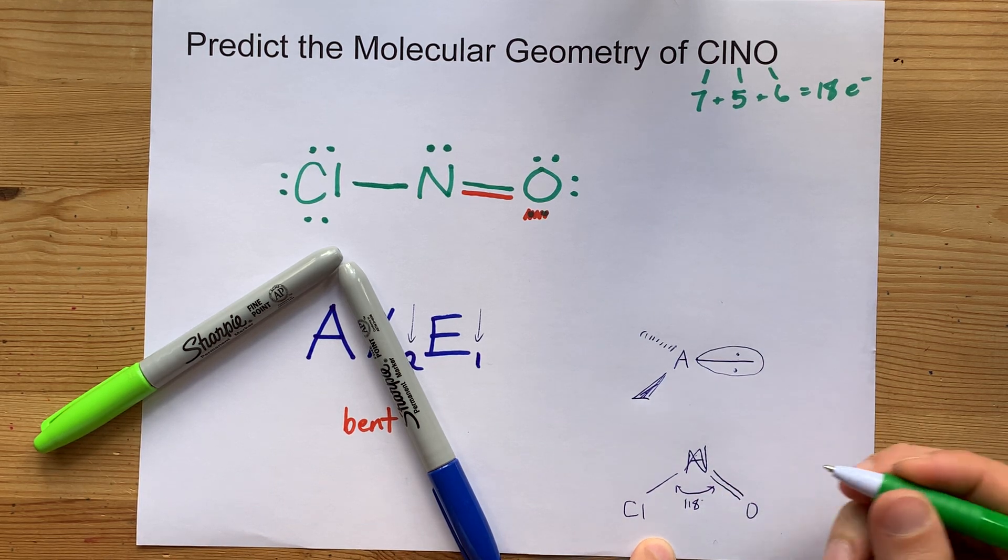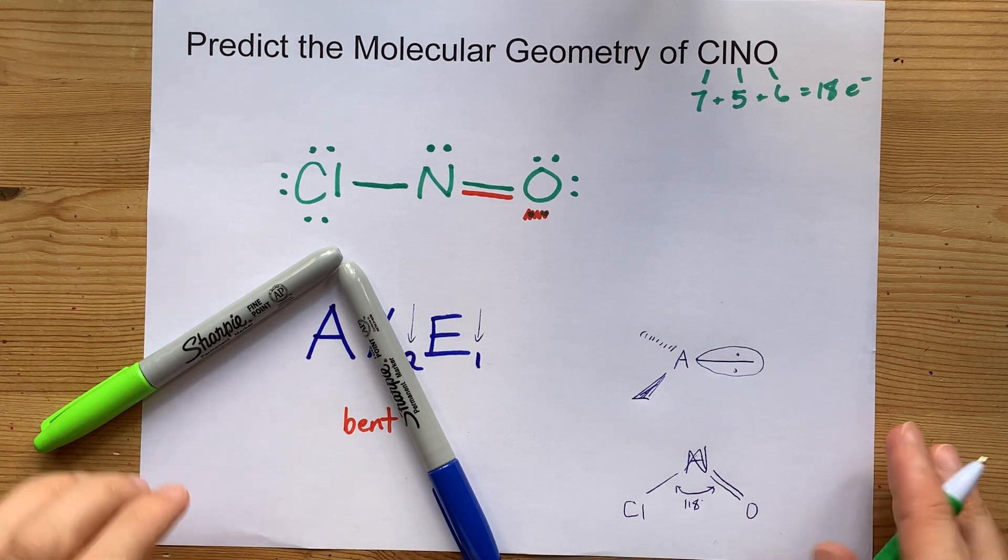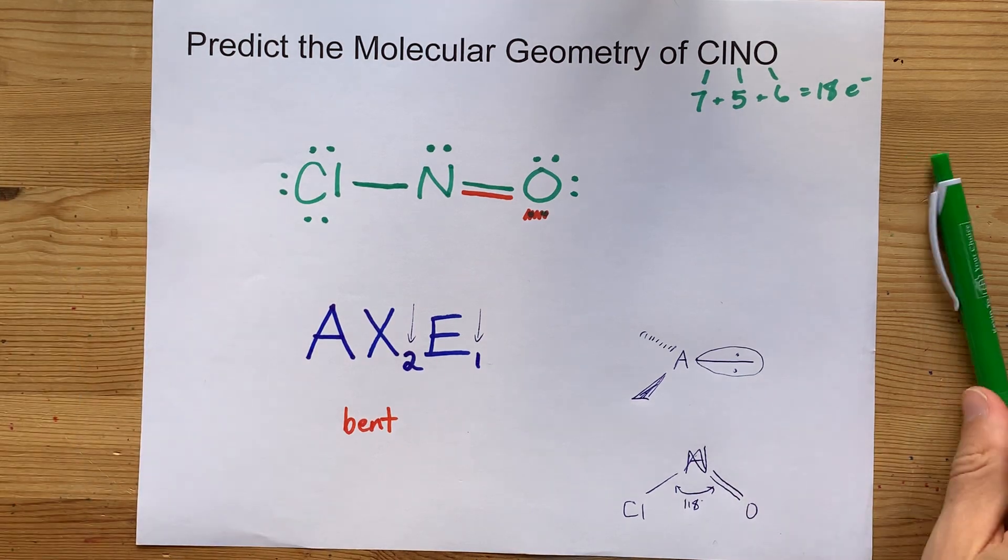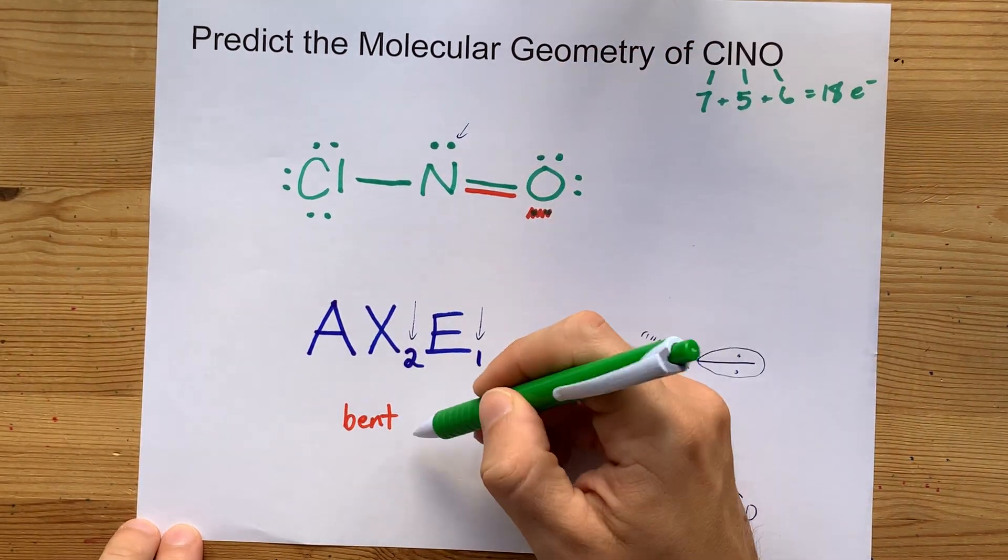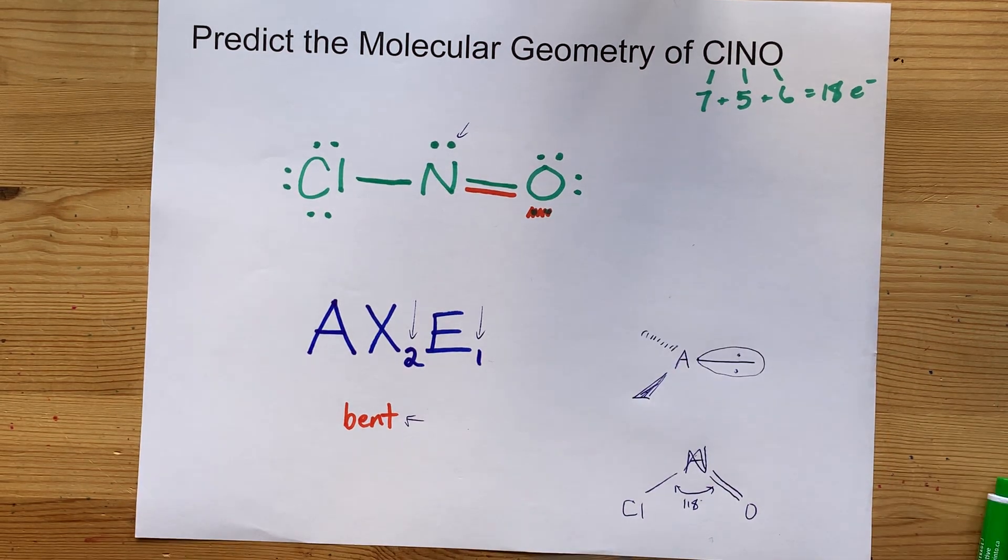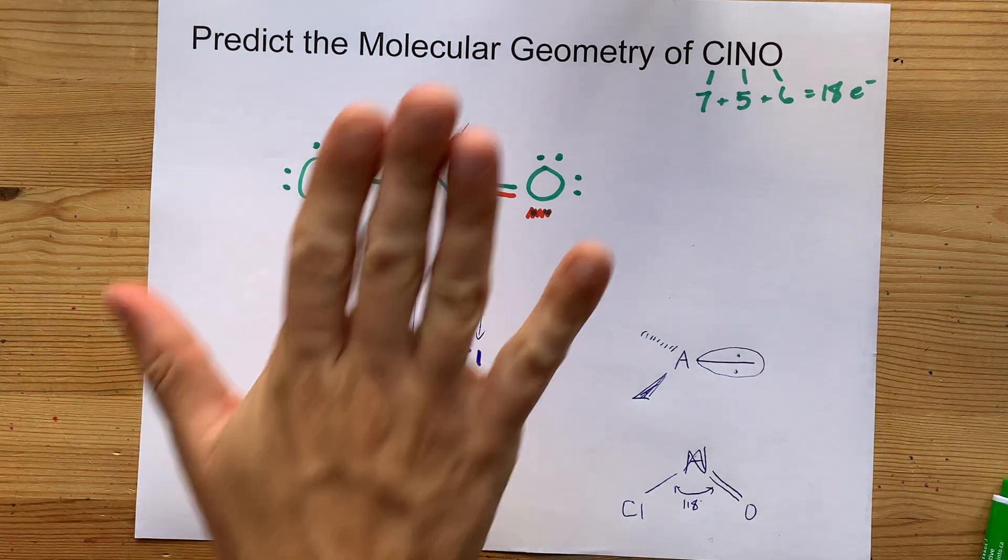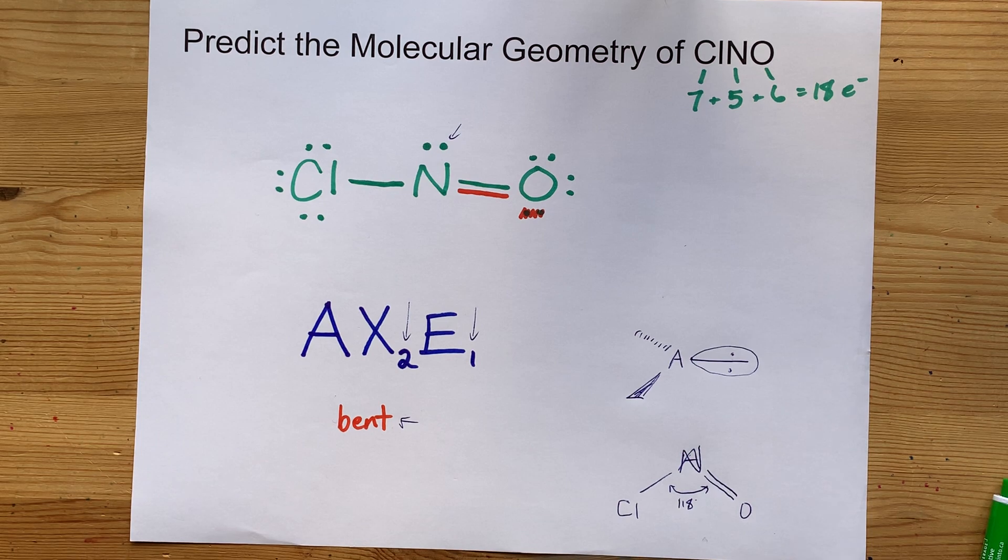I'm going to estimate it to be 118 degrees. Cool. The point is, the nitrogen is connected to two atoms and has one lone pair, so it has a non-linear or bent geometry. As always, best of luck.